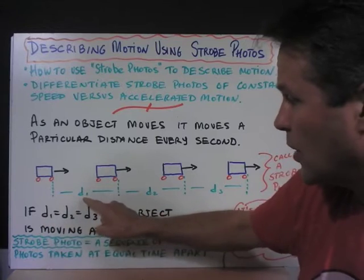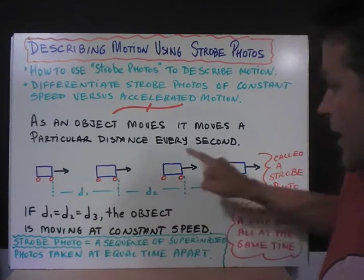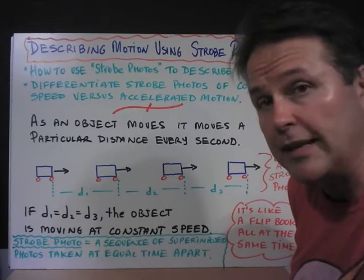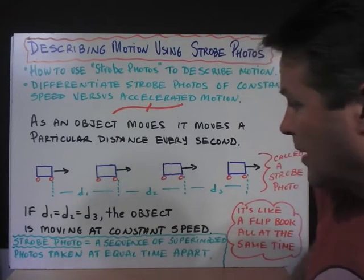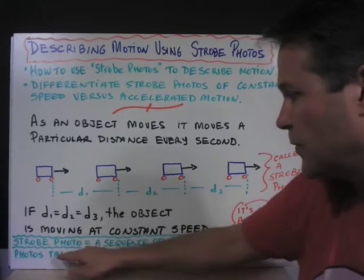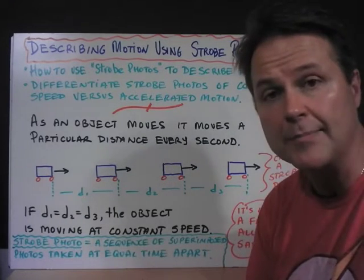So if distance one is equal to distance two, and that's equal to distance three, then we know that the object is traveling at a constant speed. A strobe photo is a sequence of superimposed photos taken at equal times apart.